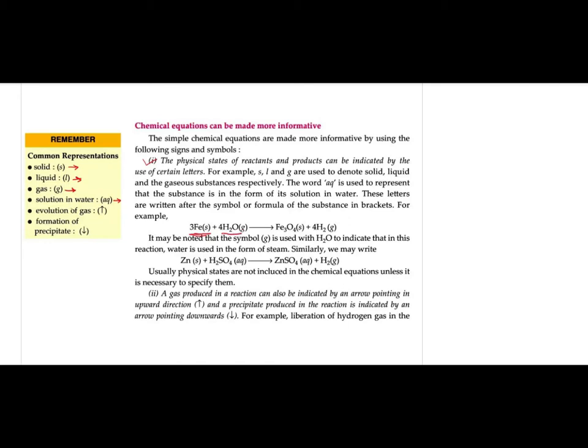For example, 3Fe(s) means iron in solid state, plus 4H₂O(g) means steam — giving Fe₃O₄, which is solid iron oxide, plus 4H₂, which is hydrogen gas. The '(g)' next to H₂O indicates they are talking about steam here.